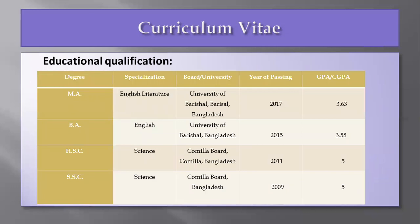Now write down your educational qualification. Be careful that you will not write it chronologically — that is, you will not write your degrees starting from SSC, then HSC, then BA, then MA. Rather, you will have to go backward. For example, at first you will write down the latest degree you have achieved. If you have achieved PhD or MPhil, write that at the very beginning. Then your post-graduation, then graduation, then higher secondary, and at last secondary.